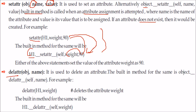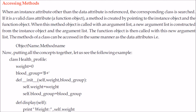Then we have `__delattr__`. When you want to delete an attribute, the built-in method syntax is `object.__delattr__(self, name)`. For example, to delete the weight attribute from h1, you can use either `delattr(h1, 'weight')` or `h1.__delattr__(self, 'weight')`.